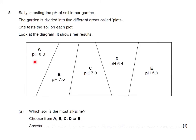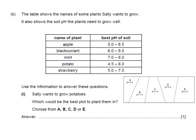And looking at this, the highest pH would be soil A with a pH of 8.